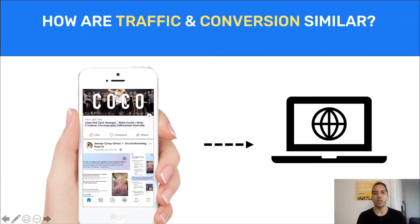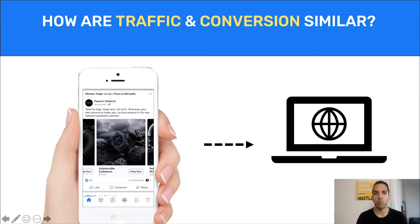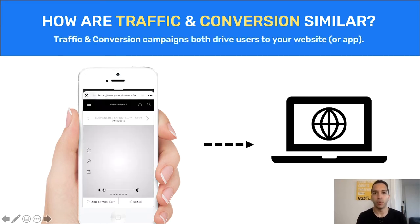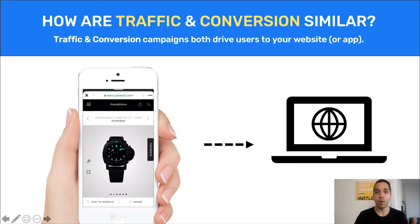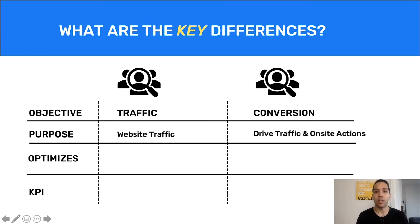The first thing I want to show you is how a traffic and conversion campaign are similar. Regardless of the objective, they're both going to drive people to your website or to your app. The difference — and probably why you're watching this video — is what happens once they're on the website. A traffic campaign is very efficient at getting people to your website, whereas a conversion campaign not only gets them to the website but also gets them to take an action once they're there.